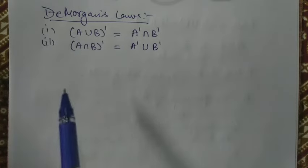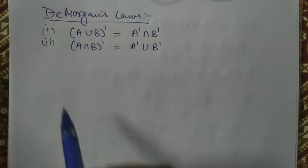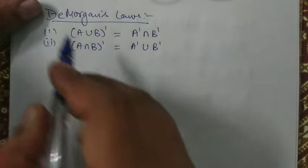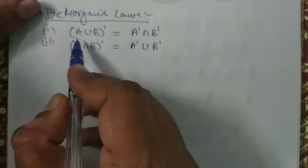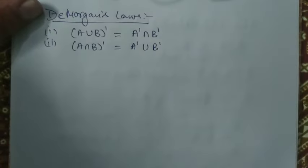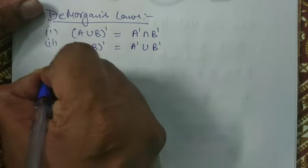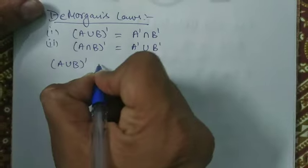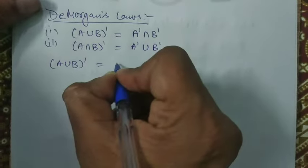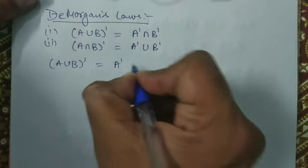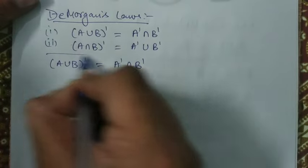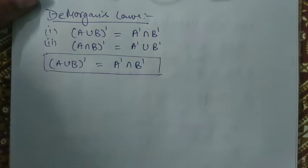In this tutorial we will study about the proof of De Morgan's Law. We will first prove the first part of De Morgan's Law, that is: the complement of A union B is equal to the intersection of A complement and B complement.